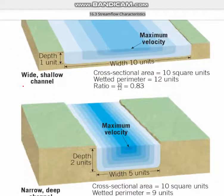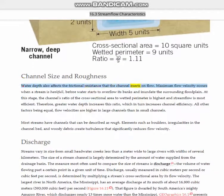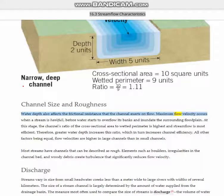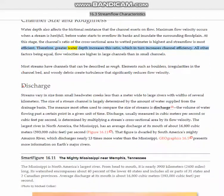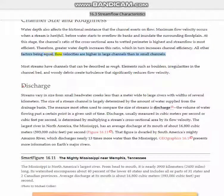Channel size and roughness. Water depth also affects the frictional resistance that the channel exerts on flow. Maximum flow velocity occurs when a stream is bank full, before water starts to overflow its banks and inundate the surrounding floodplain. At this stage, the channel's ratio of cross-sectional area to wetted perimeter is highest and stream flow is most efficient. Therefore, greater water depth increases this ratio, which in turn increases channel efficiency. All other factors being equal, flow velocities are higher in large channels than in small channels.